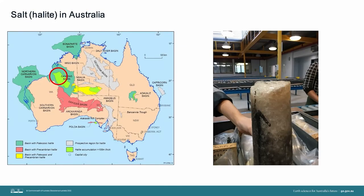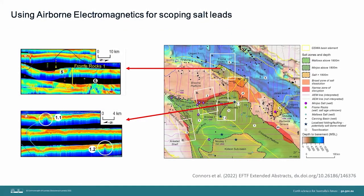Now let's move to the Canning Basin in Western Australia. The Canning Basin is known to contain thick, extensive salt beds, but much of it is quite deep. A good option is to look for salt diapirs, where columns of salt have migrated towards the surface. We have used some of the fabulous airborne electromagnetic data, or AEM data, collected under EFTF, to look for shallow salt leads. AEM can only resolve the top five to six hundred metres, but this might be okay to look for disrupted zones above salt diapirs, as seen here at the Frome Rocks diapir, the only known salt diapir in this region. Working with the University of Queensland, we have identified some leads that are worth further investigation.